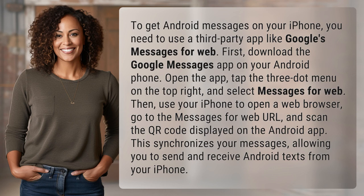Open the app, tap the three dot menu on the top right, and select Messages for Web. Then, use your iPhone to open a web browser, go to the Messages for Web URL, and scan the QR code displayed on the Android app.